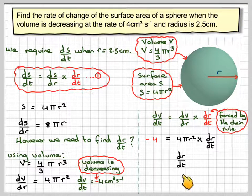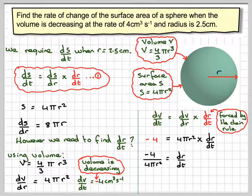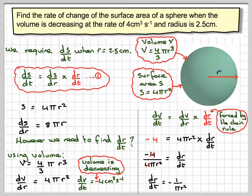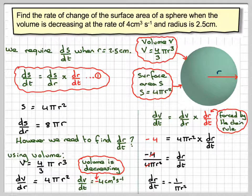That gives us dr/dt equals minus 4 over 4π r². The 4s cancel out, so we're left with dr/dt equals minus 1 over π r². We now have ds/dr from earlier and we now have dr/dt.